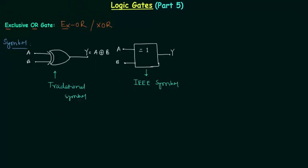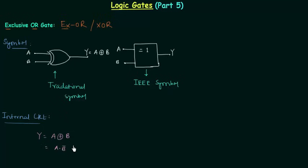Now we will move to the internal circuit. First we need to find the expansion of A XOR B, which will help us implement the circuit. Expanding A XOR B gives us: A·B' + A'·B. This is the Boolean expansion for XOR.